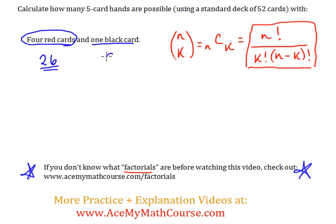And black cards are also, of course, 26. Half are red, half are black, of course. So from the 26 red cards, we're going to select four of them. So 26 choose four.